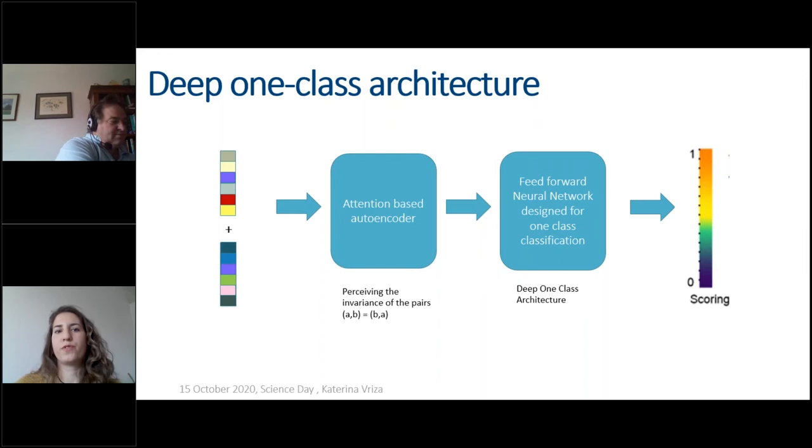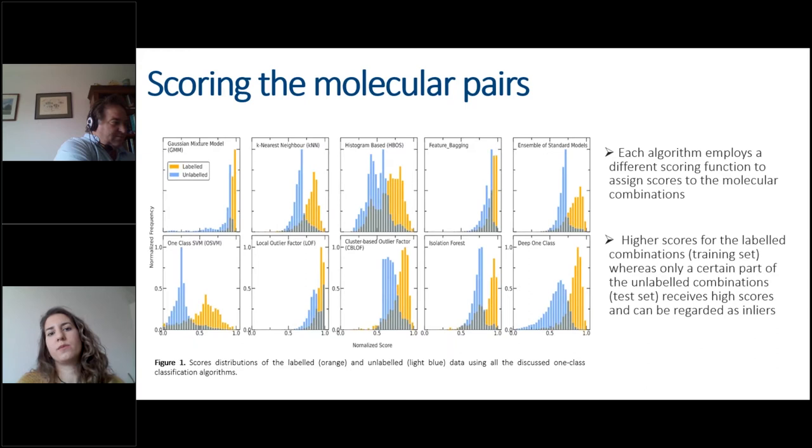We wanted to check which of these methodologies is better. Initially we had a look on the scores. How each of these algorithms is scoring the molecular pairs. The score distribution can be seen here. With orange we can see all the labeled data whereas with light blue all the unlabeled. We can observe that the majority of the labeled data, the known data, get high scores whereas the blue data, one part of the blue data get high scores and can be regarded to belong in the same cluster as the known ones. And the other one is taking lower scores and can be regarded as outliers and outside of the known cluster.